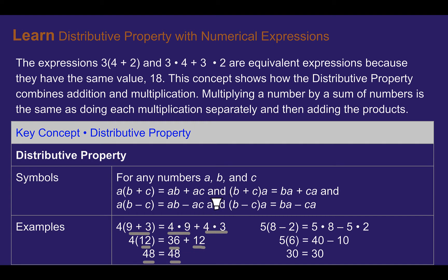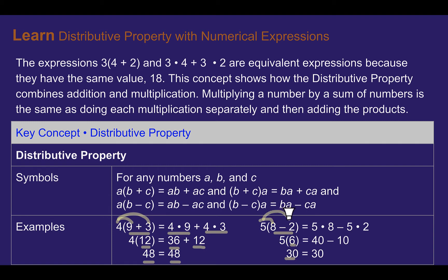If you're choosing to multiply, you may have seen this method where you make rainbows to show you're multiplying to each number. The same works with subtraction — just be careful. If we subtract first: 8 minus 2 is 6, then multiply by 5, we get 30. Or if we multiply each number by 5 first, then subtract, we'd get 40 minus 10, which is still 30.